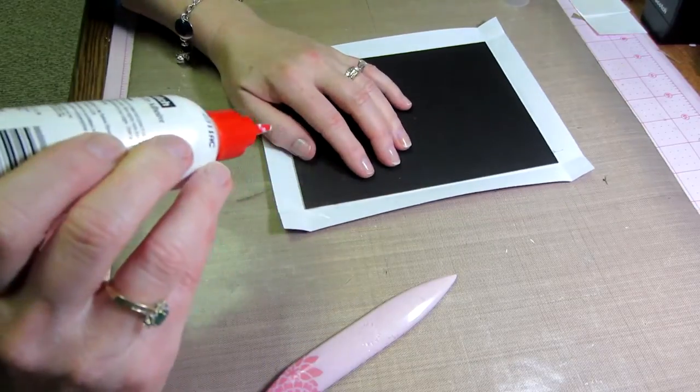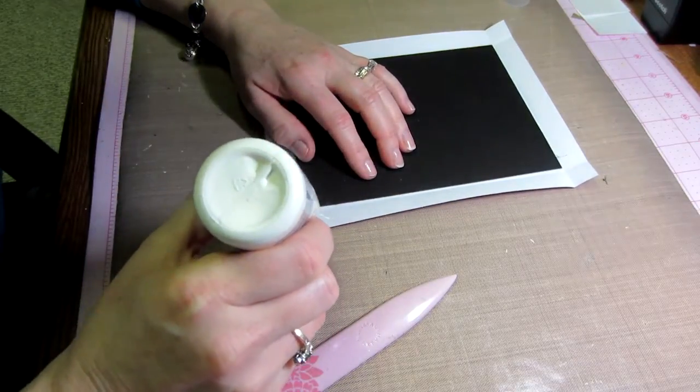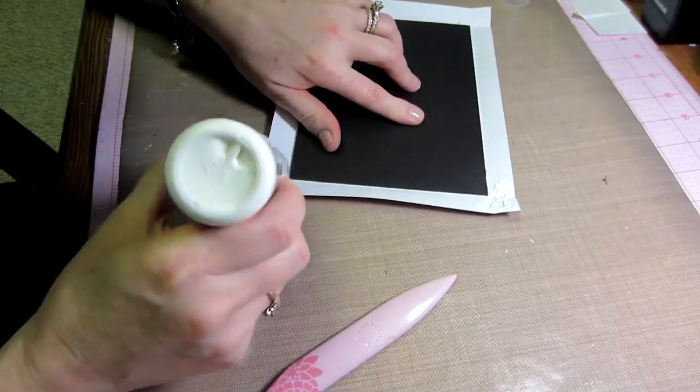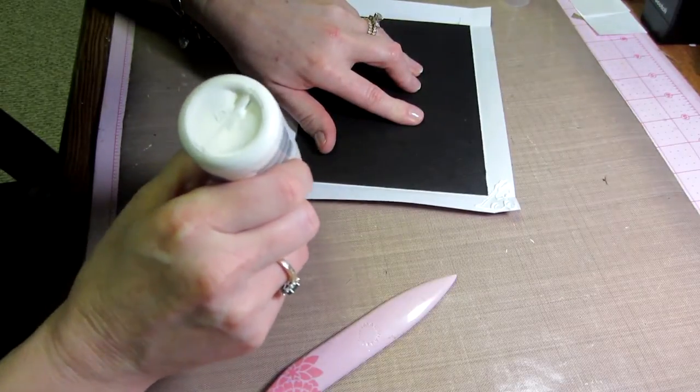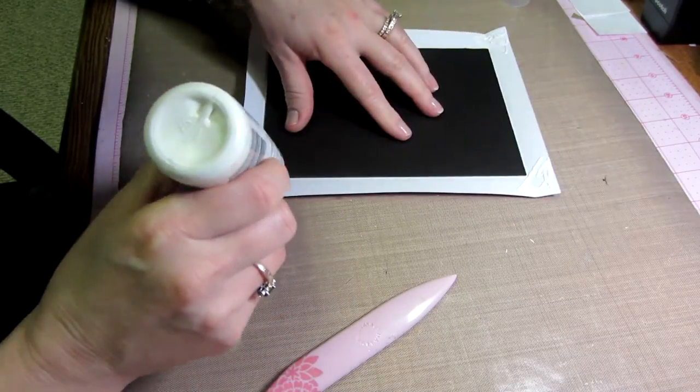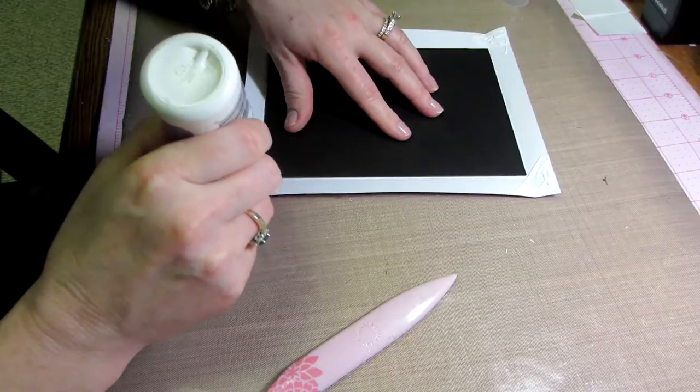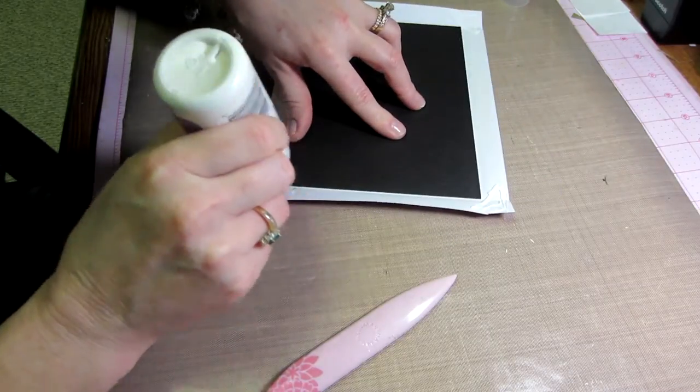Put glue on this corner. Actually, I could do like two at a time. I'm really lazy and fast, and I could do four at a time. I just do that sometimes.